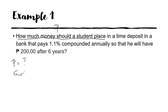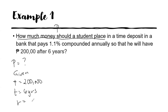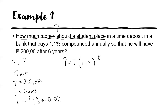Let us identify the given. The 200,000 is the future value. The time is 6 years and the rate is 1.1%, or this is 0.011. The formula for the present value is equal to F times the quantity 1 plus R raised to negative T.